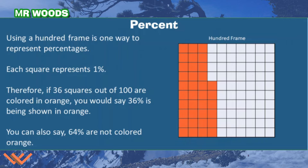Using a 100 frame is one way to represent percentages. Each square represents 1%. Therefore, if 36 squares out of 100 are colored in orange, you would say 36% is being shown in orange — because counting gives us 30 plus 6 more, which is 36%.